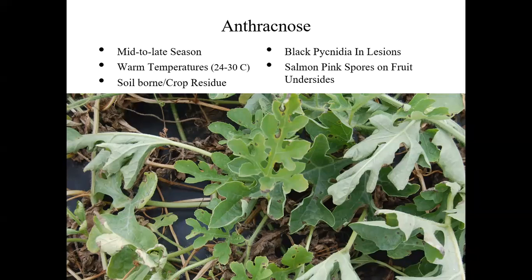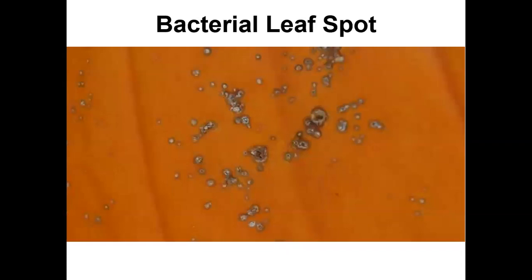If you're looking at the lesions with a hand lens, you might see the small black pycnidia in the lesions — but only under humid conditions. Under very humid conditions, you can actually get bright salmon pink spores forming on the underside of the fruit where it's a little more humid.